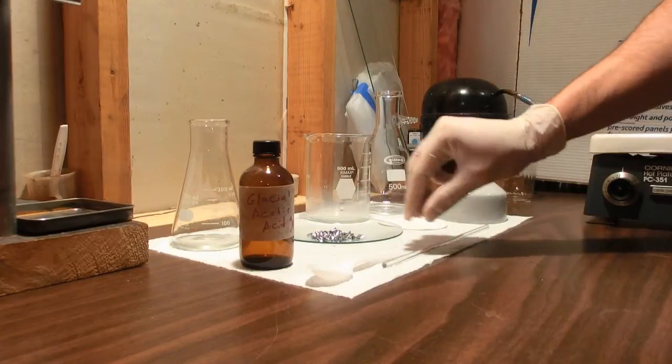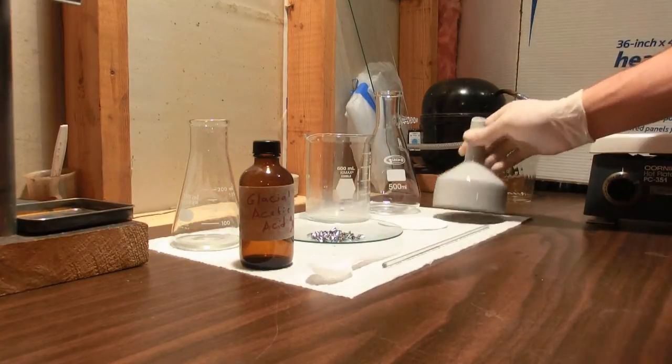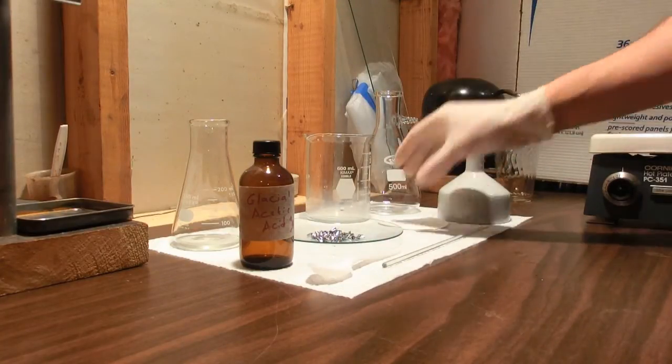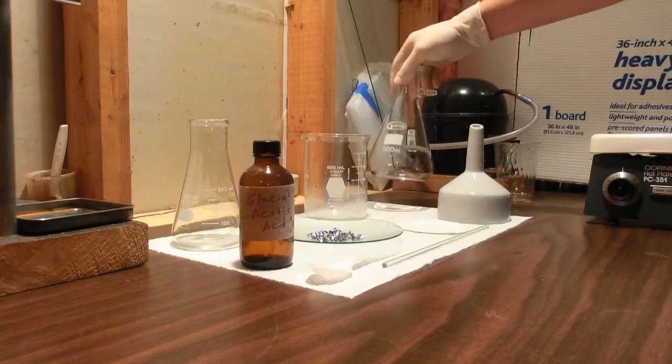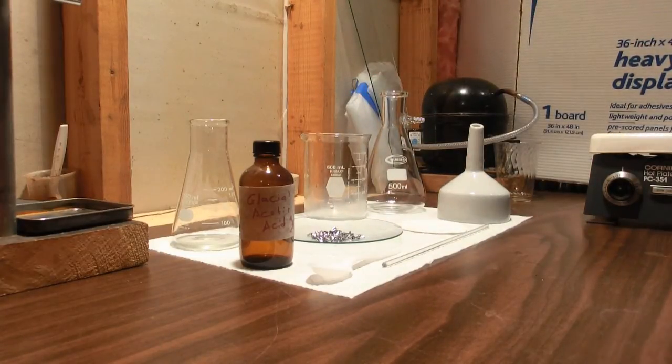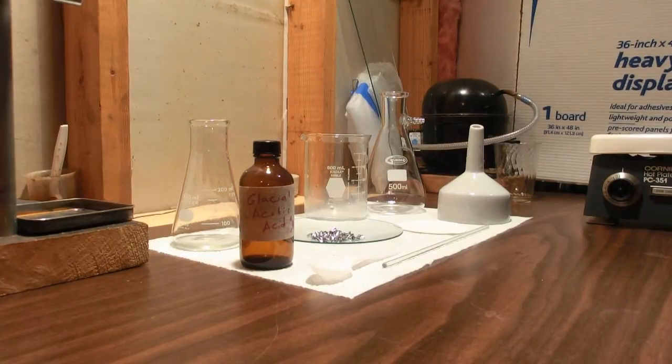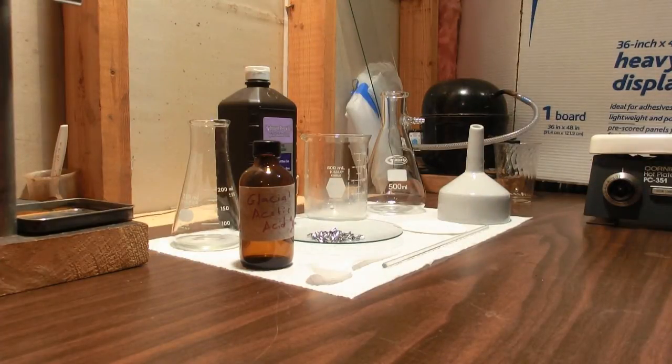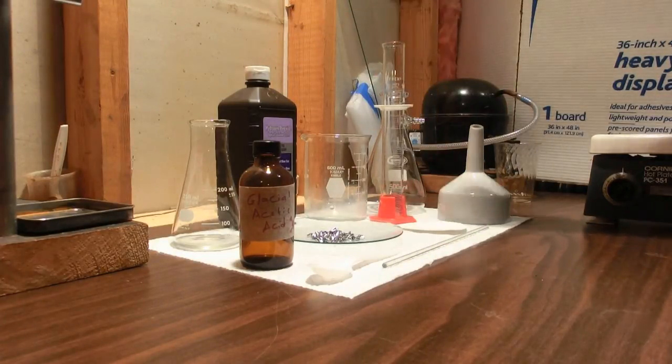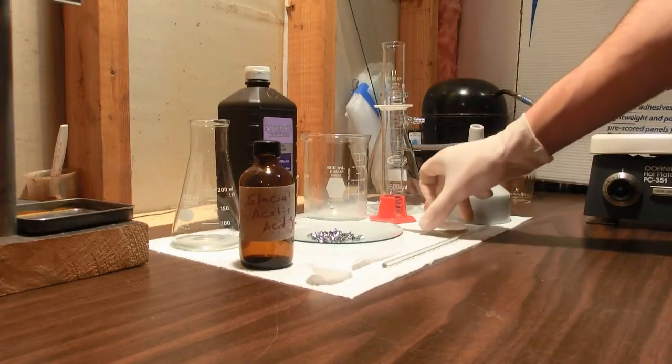We'll also need a stirring rod, maybe a spoon, a Buchner funnel, some filter paper, another beaker, and of course a filter flask. So let's get started. Oh, one more thing. Also need some 3% hydrogen peroxide and graduated cylinder.